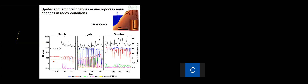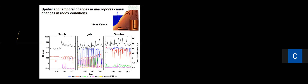In March, really only the upper 15 centimeters or so is oxidizing, and below that it becomes very reducing. Whereas in July, almost the entire column — except for the 45-centimeter depth — has oscillations where redox conditions become more oxidizing. In October, we're back to similar behavior as March, where only the top 15 centimeters is oxidizing. That's important because where we have oxidizing conditions, the rate of carbon respiration is much higher, particularly in the presence of oxygen.